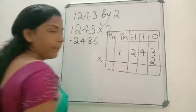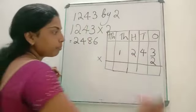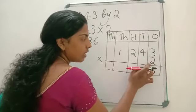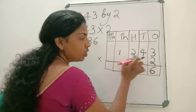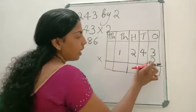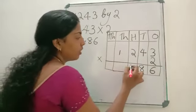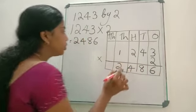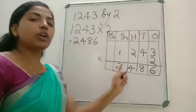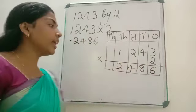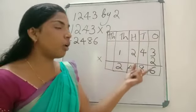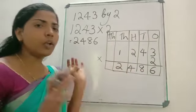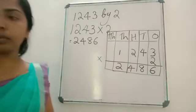Now we are going to multiply. 2 into 3 is 6. Next, 2 into 4 is 8. Again, 2 into 2 is 4. Then, 2 into 1 is 2. So the answer is 2,486. If you are drawing the column and writing, you can avoid mistakes. In any way, you can do it. Let us do one more question.